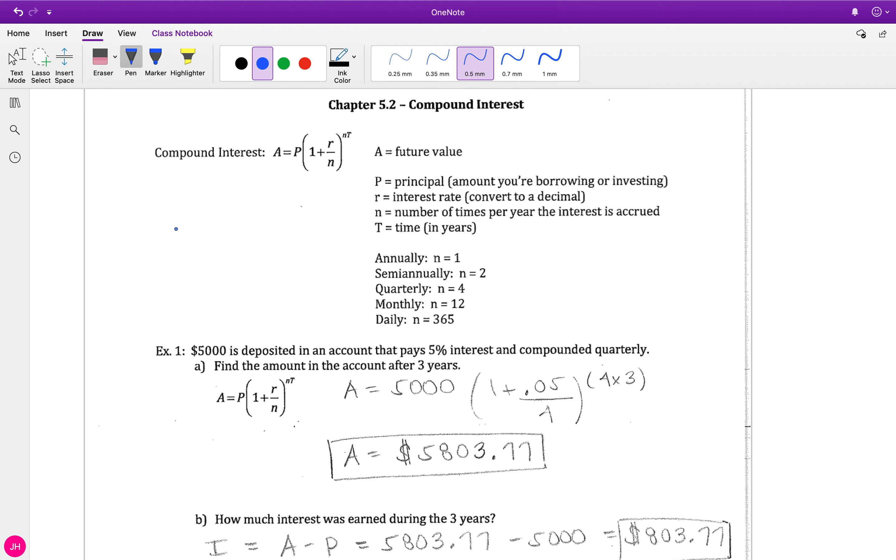Our next formula is more complicated. You can see here we've got more letters, though a lot of the letters are the same. A is the future value - what's it going to do later on. P is the same, R is the same. In this one, n is new - it's the number of times that we're going to accrue interest.